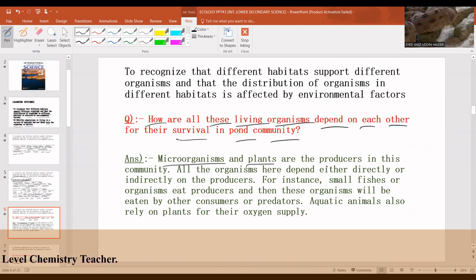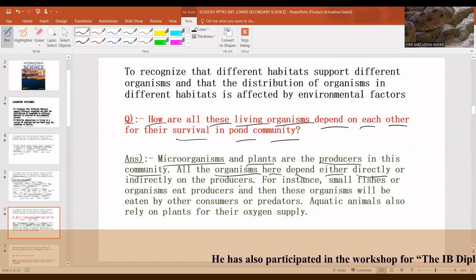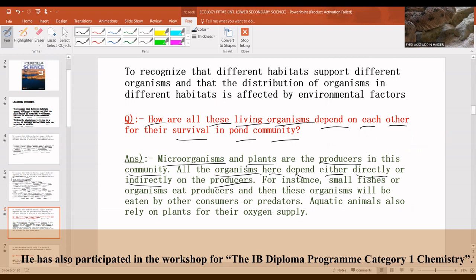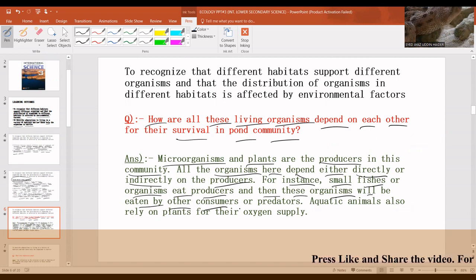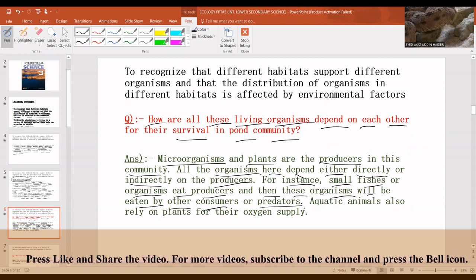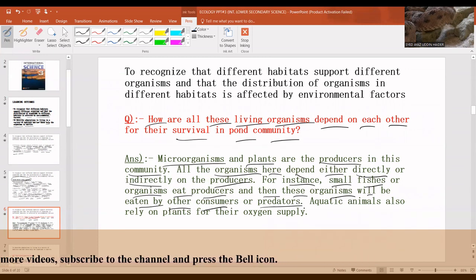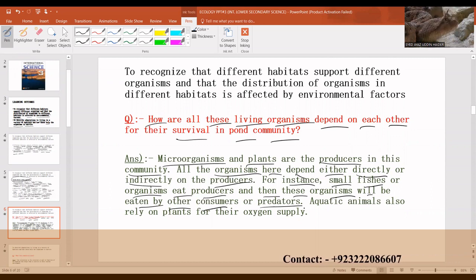Microorganisms and plants are the producers in this community. All the organisms here depend either directly or indirectly on the producers. For instance, small fishes or organisms eat producers and then these organisms will be eaten by other consumers or predators. The other consumers are also known as predators. The consumers which feed on producers are not predators. They are prey.